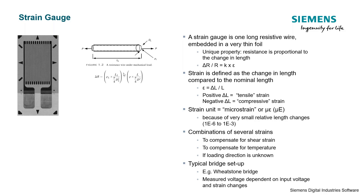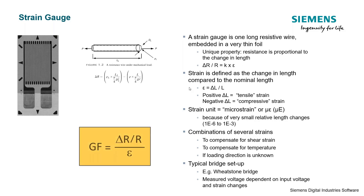Using the known resistivity properties of a wire, we can derive a relationship: ΔR/R equals K, the gauge factor, times the strain. Another way of writing that is the gauge factor equals ΔR/R divided by the strain.